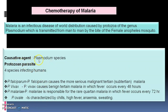The causative agent is all Plasmodium species — a protozoan parasite. There are four species infecting humans: Plasmodium falciparum, which causes the more serious malignant malaria; Plasmodium vivax; Plasmodium malariae, responsible for quartan malaria in which fever occurs every 72 hours; and Plasmodium ovale, characterized by chills, high fever, anemia, and sweating. All four types are responsible for causing malaria.